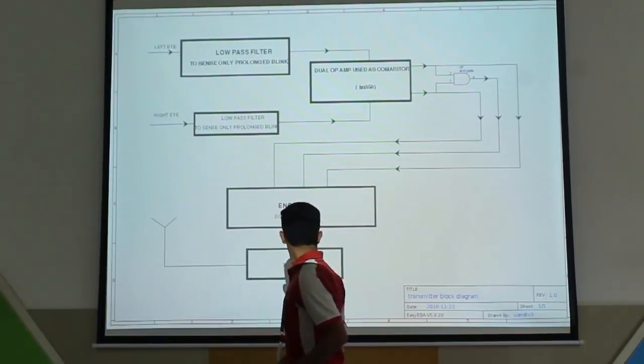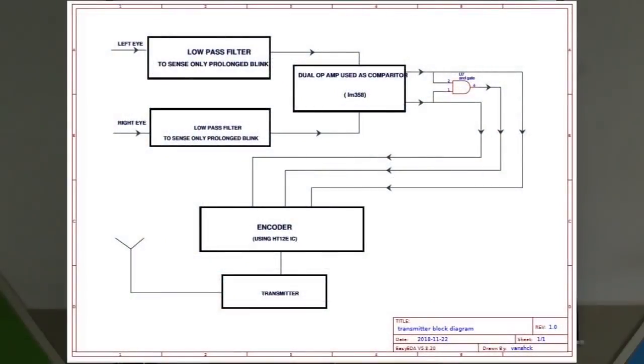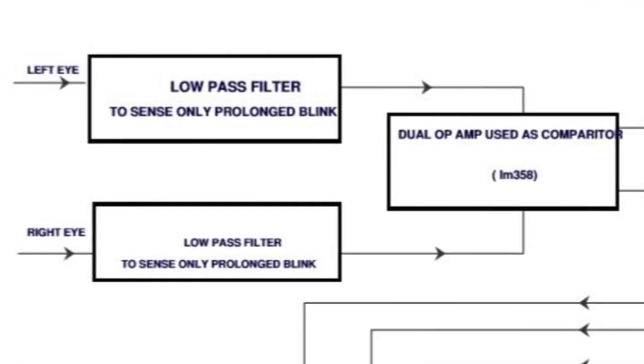Let's see the working of the transmitter. The change in the voltage as we blink is sensed by the left eye and the right eye's low pass filters. We sense only the prolonged blinks so the normal blinks will not be sensed.